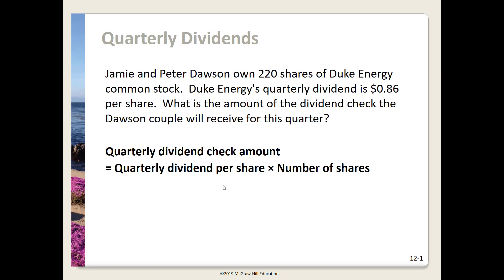Here's our formula to determine the quarterly dividend check amount. We're going to take the quarterly dividend per share and multiply it by how many shares we have. So we'll take the 86 cents and multiply it by 220, and we get $189.20 for our quarterly dividend.